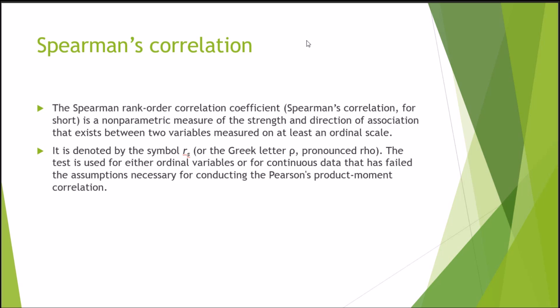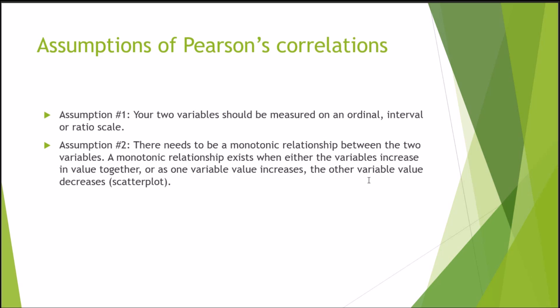The test is used for either ordinal variables or for continuous data that has failed the assumptions necessary for conducting the Pearson's product moment correlation. If you have continuous data that is non-parametric or ordinal data, then you can use a Spearman's correlation, as opposed to a Pearson's. There are only two assumptions that need to be met for Pearson's correlations. Assumption one is that the two variables should be measured on an ordinal, interval, or ratio scale. Assumption two,